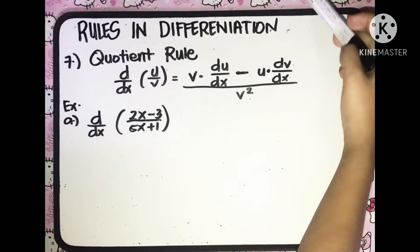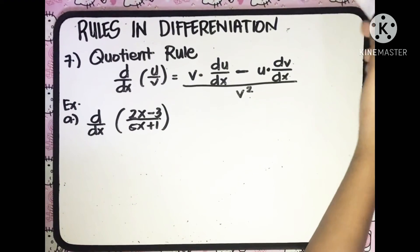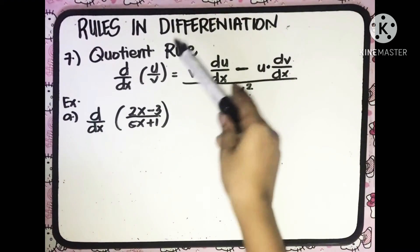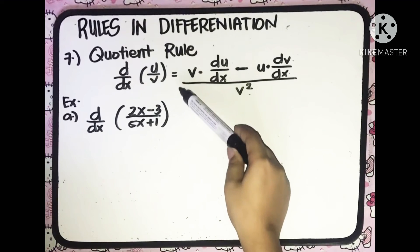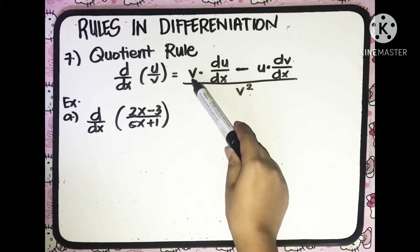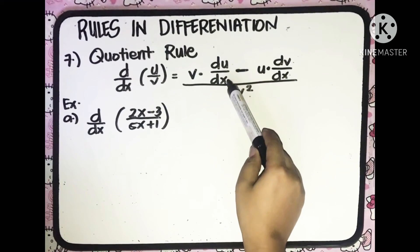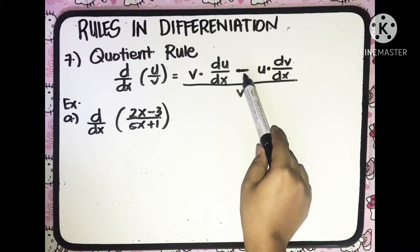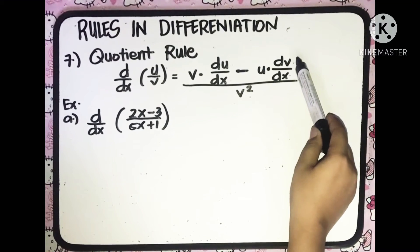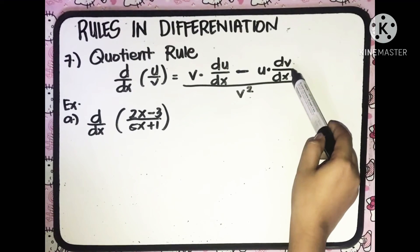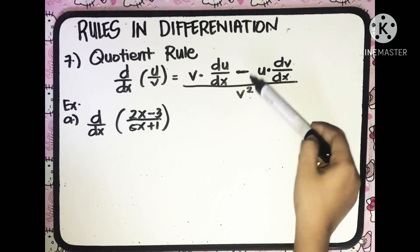The seventh rule is the quotient rule. The derivative of u over v with respect to x is equal to v multiplied to the derivative of u with respect to x, minus u multiplied to the derivative of v with respect to x, all over v squared.